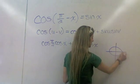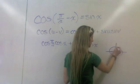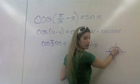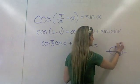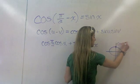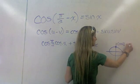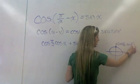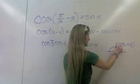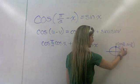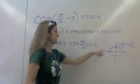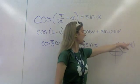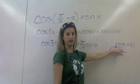So if we draw our unit circle and go pi over 2 radians, which is 90 degrees, we end up at this point right here. We know the coordinates of this point are cosine of pi over 2 comma sine of pi over 2, which in this case is literally 0 comma 1. Which means that cosine of pi over 2 is 0 and sine of pi over 2 is 1.